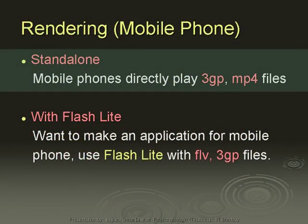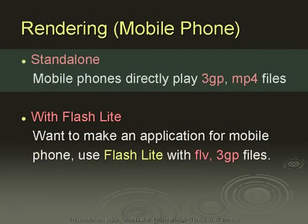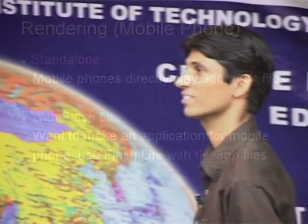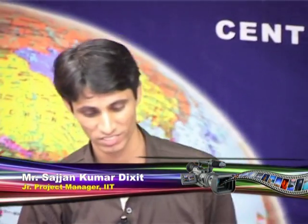Rendering for mobile phones can be categorized into two types: standard and standalone. If you want to render a file for a mobile phone to play directly on it, you should render in 3GP or MPEG-4. For Flashlight — suppose you have multiple courses in an educational setting with a table of contents and specific requirements — this type of application can be created in Flashlight. Flashlight is built-in software of Adobe Flash and has a Device Central with a list of mobile phones. You can create a Flashlight document using FLV or 3GP files.